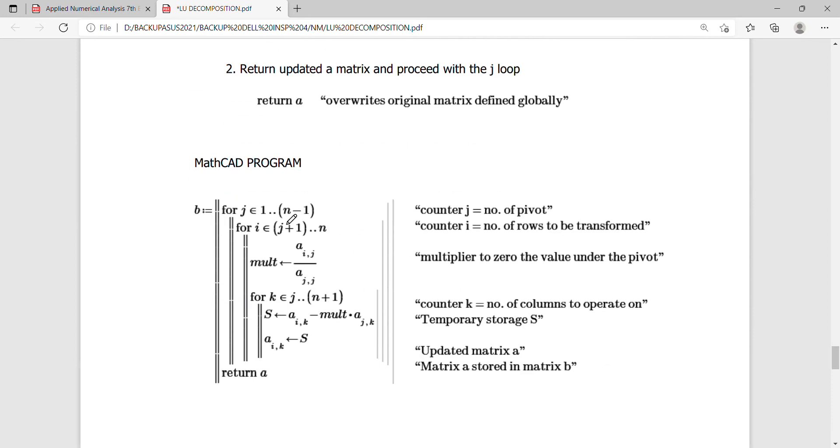So the program is very short in MathCAD, a very short structured nesting for loop. So I use here the for loop. You can use the while loop. Other loops can be done. So I simply use the for loop here. So for J equals 1 to n minus 1, and for I equals J plus 1 to n. So I just define the counter here for the number of pivots and the counter for the number of rows to be transformed.